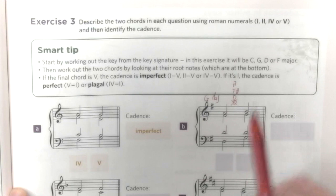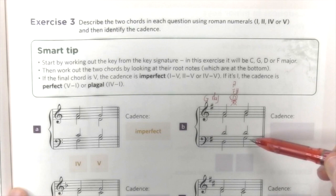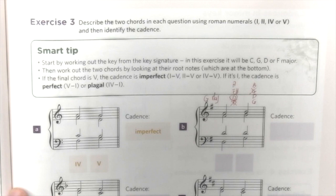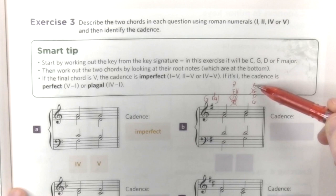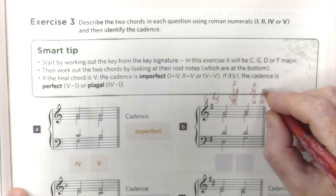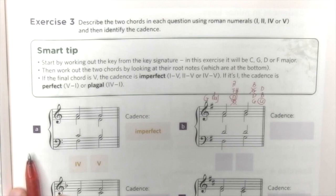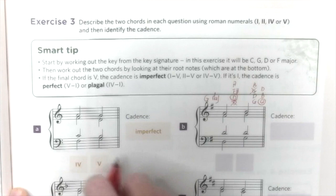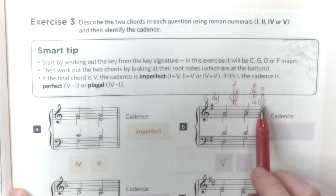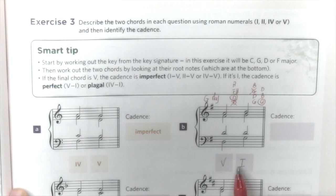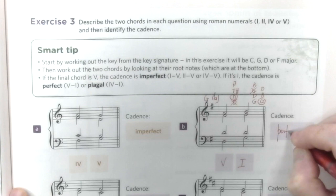What is the cadence that has chords built on the fifth and first degree? The perfect cadence. So this is the procedure I would recommend, step by step. For the next example, we have B-flat — we could be in F major or D minor. In this case, all the chords are in a major key, so let's consider F major.